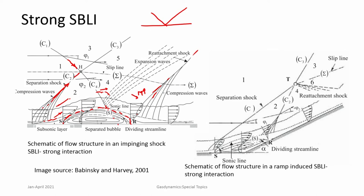Similarly for a corner flow, the boundary layer separates ahead of the corner, so a separation shock forms much upstream. After separation, the flow reattaches and a reattachment shock is formed, and shock-shock interactions occur due to these two shocks.